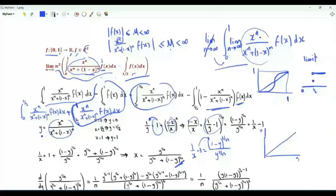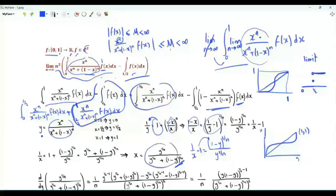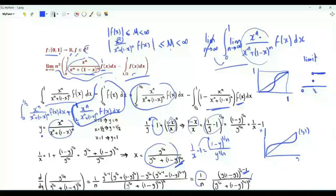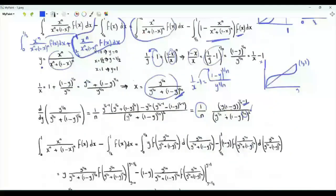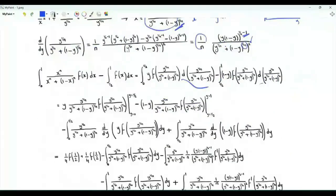If n is 1, x equals y. As we increase n, the function changes shape. The derivative of x with respect to y is (1/n) times y(1-y) all to the power (1/n - 1), divided by the square of (y^(1/n) + 1 - y^(1/n)). We now write this difference in terms of variable y, obtaining dx, then do integration by parts.